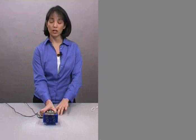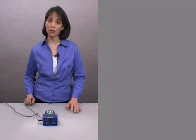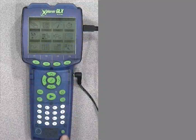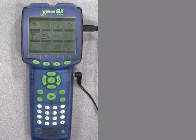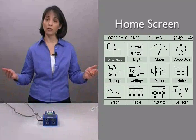The first thing you want to do is make sure that your Explorer GLX is powered on. You do that by pushing the power button right here. When it does turn on, it opens to this home screen.